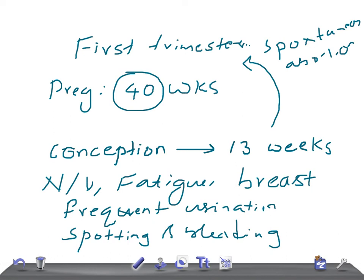The most common cause for spontaneous abortion in the first trimester is fetal causes — specifically cytogenetic abnormalities, where chromosomal abnormalities of the fetus lead to spontaneous abortion. These are the key changes that happen in the first trimester. Thank you so much for watching, take care.